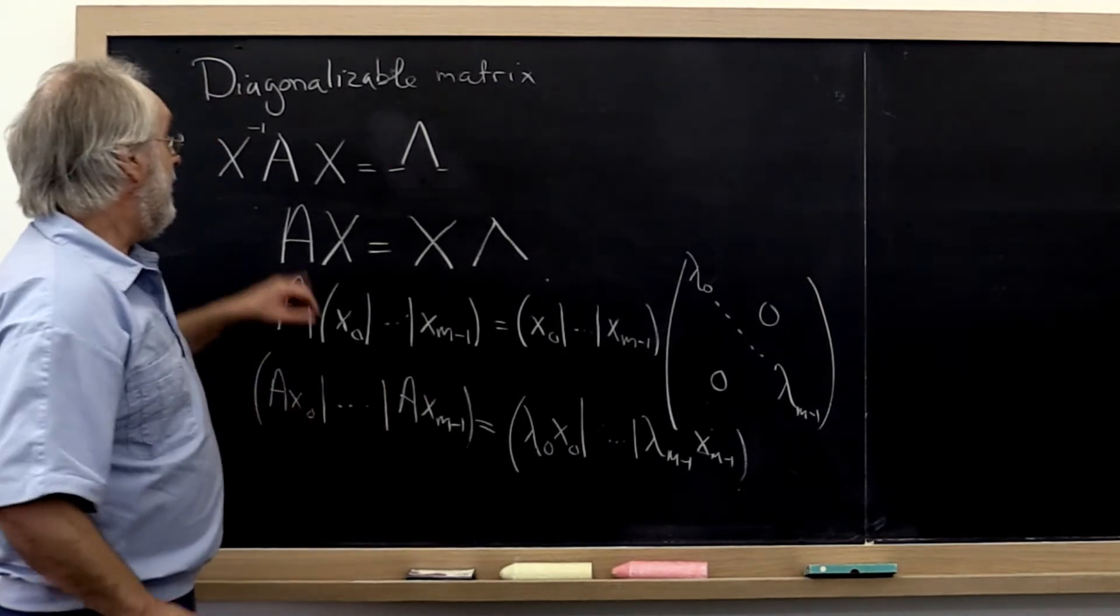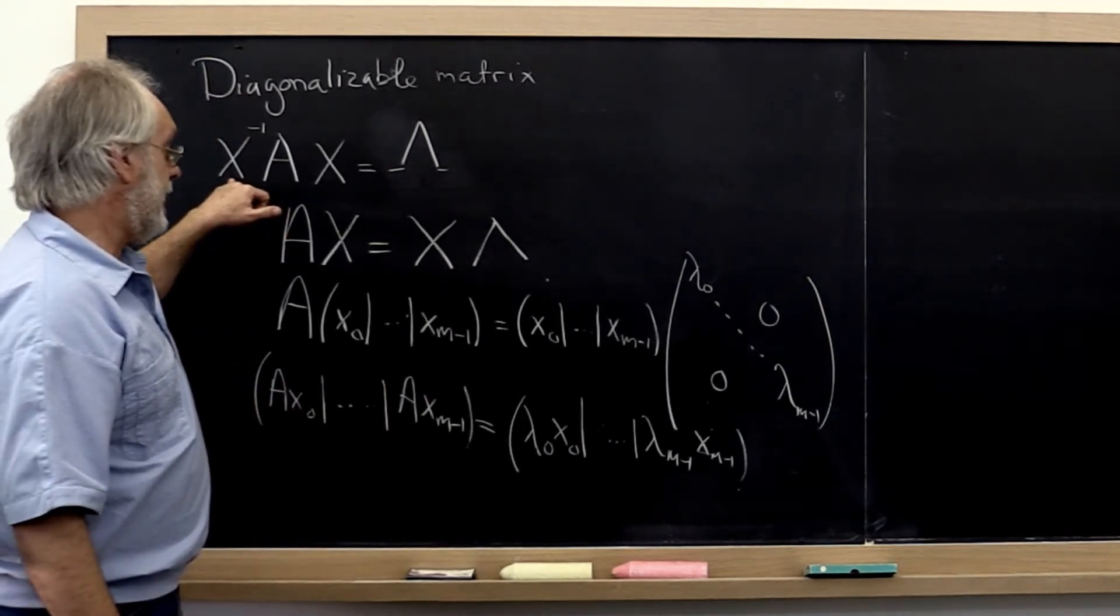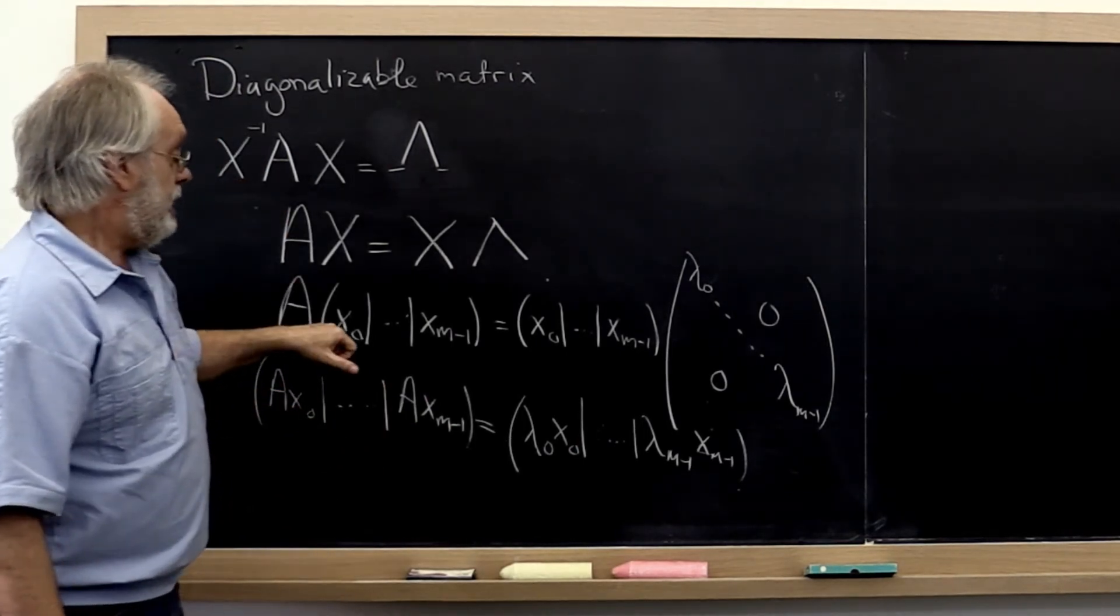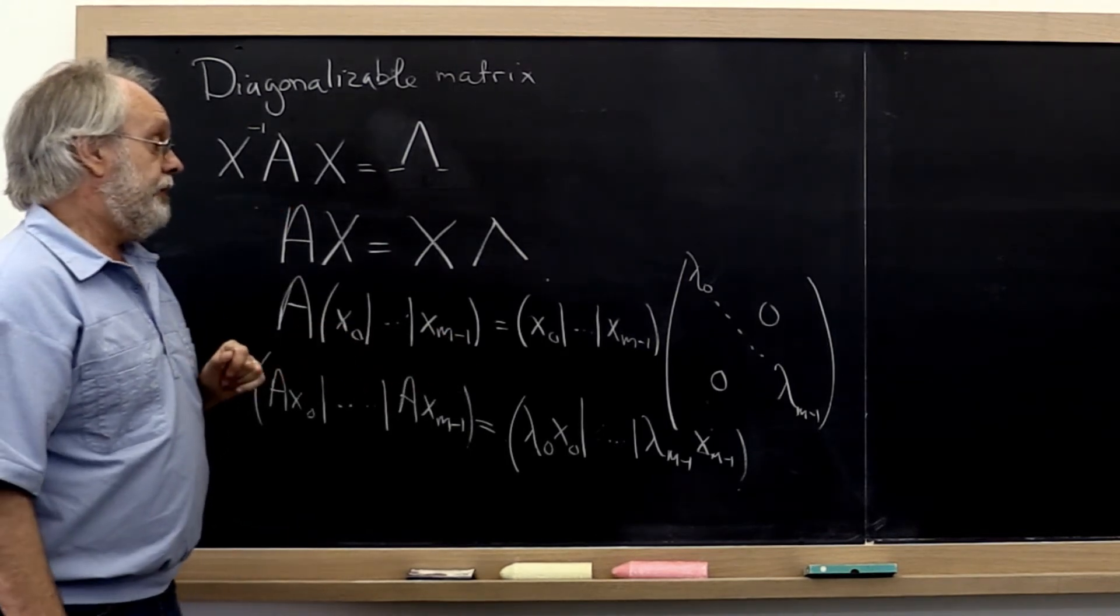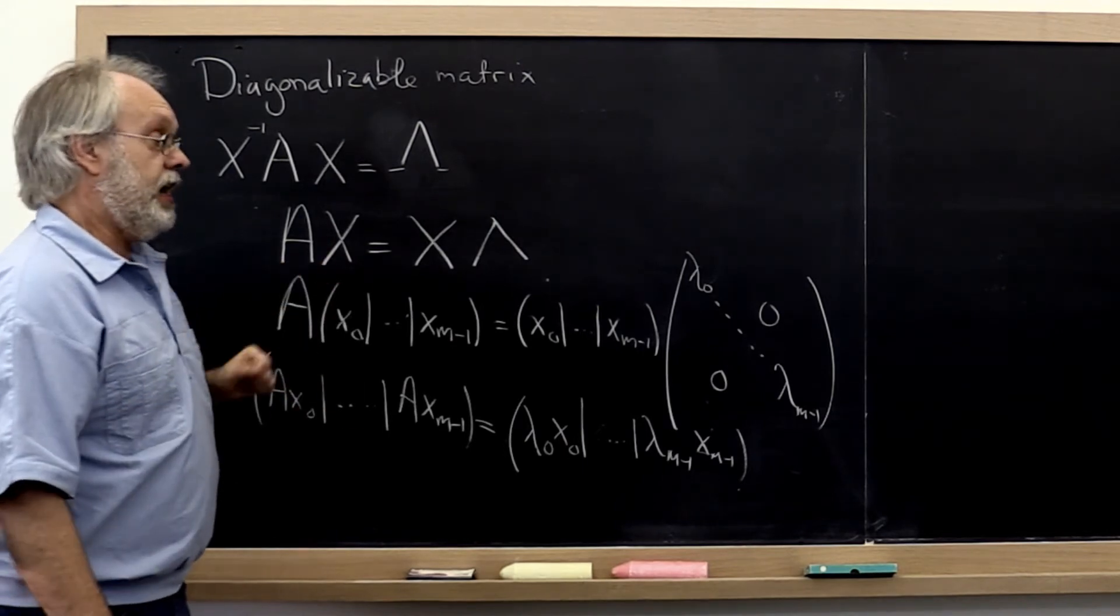So from this we conclude that if we have such a matrix X, then the columns of that matrix X equal eigenvectors of our matrix A.